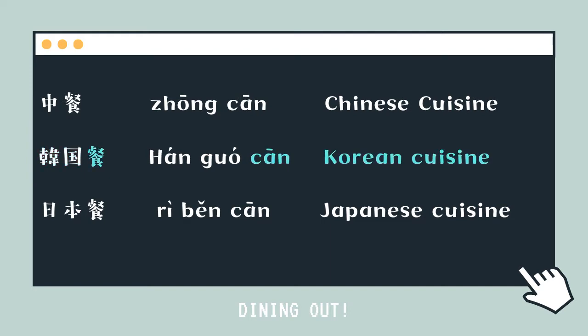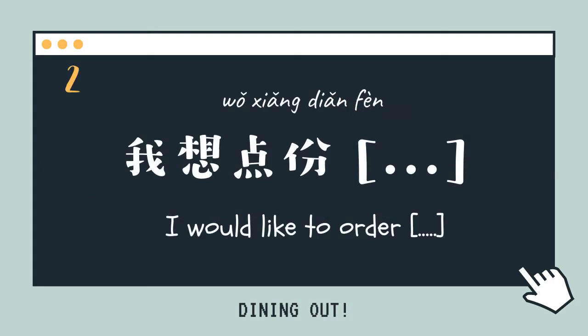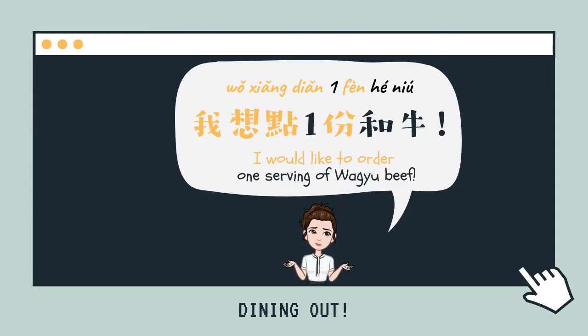中餐, 韓國餐, 日本餐. 我想點份 — I would like to order. 我想點一份和牛 — I would like to order one serving of Wagyu beef.